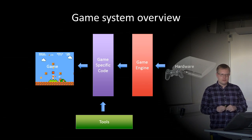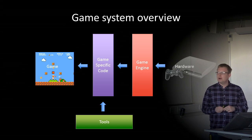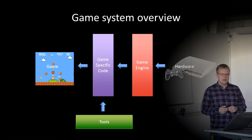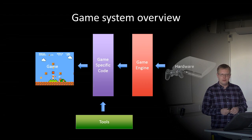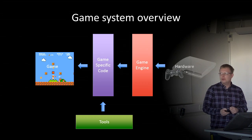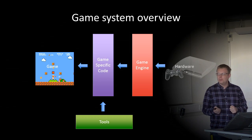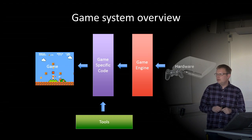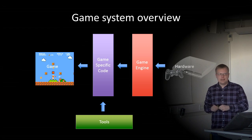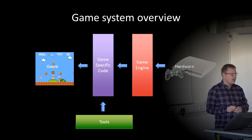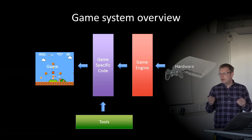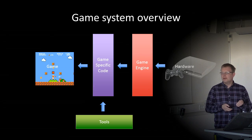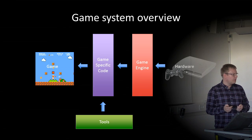We have the game system overview: we have the hardware, and on the hardware the game engine is running. On top of the game engine we have game-specific code, and those two together make up the game. We can use tools like Maya and Audacity to create 3D models, sound effects, and similar.